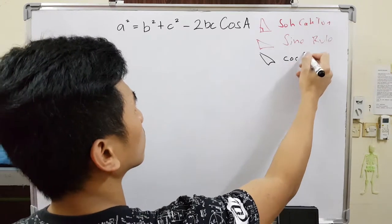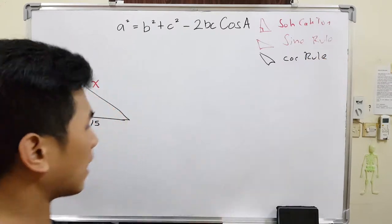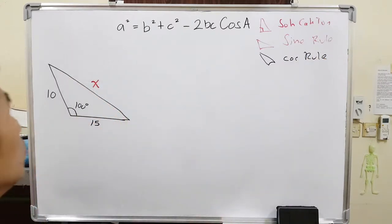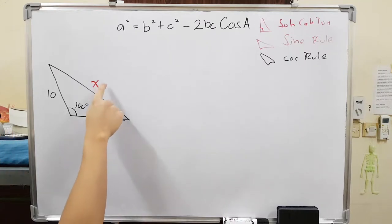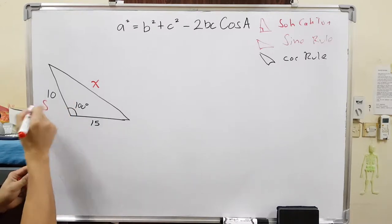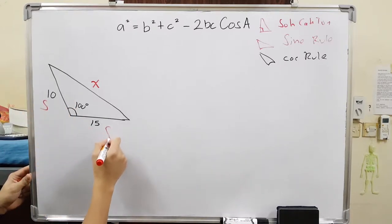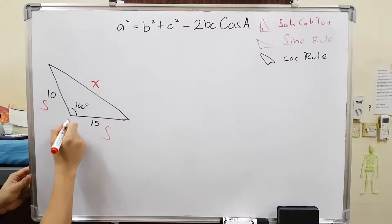And lastly, the cosine rule. This is the last, this is one way to solve a triangle. Now the question is, how do we know when to use the cosine rule? For example, you are looking for a side. If you are missing a side, and the only given information is another side, and another side in here, and the angle in between them.